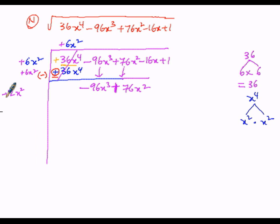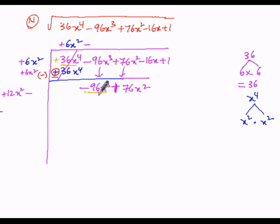Both terms are positive, so we get a positive result. But here we need a negative sign — the first term is negative. So we have to take the negative sign here and here as well. If it were positive we would take positive and positive — whatever sign we take here, the same must be taken there. So we need 96, and the first term of the new divisor is 12x squared, making the new dividend's first term minus 96x cubed.